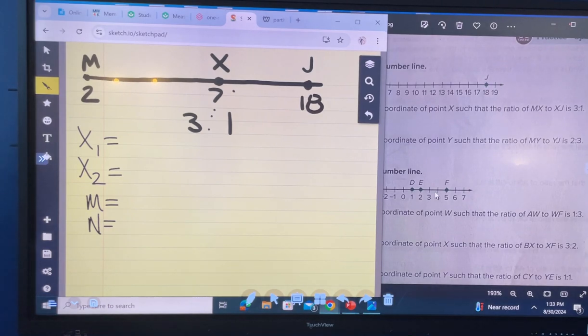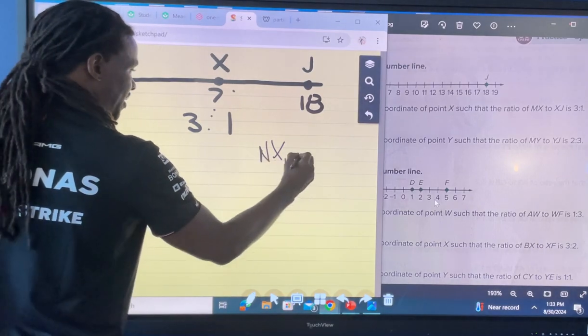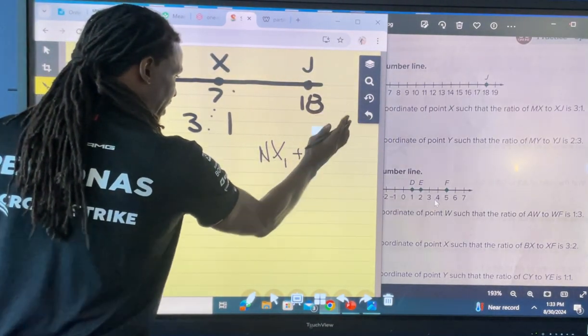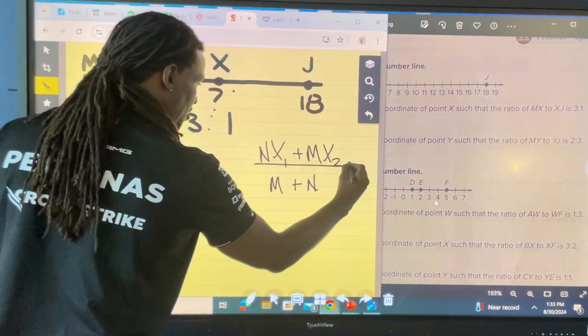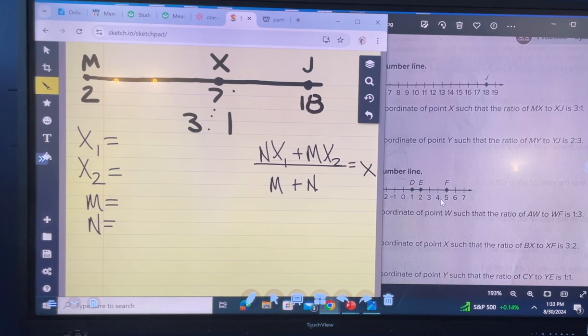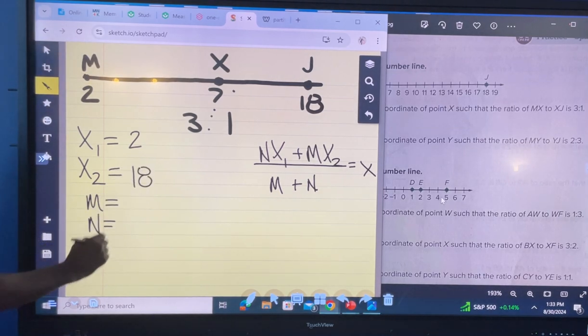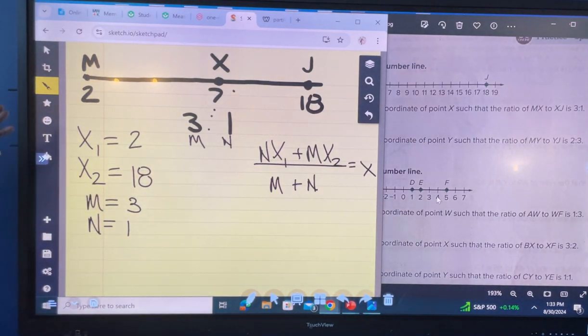All right. So remember our partitioning line segment formula. We're going to have to multiply N times X1, add that to M times X2, and we're going to divide that by M plus N. And that's going to give us our X. So what's my X1? X1 is 2. My X2 is 18. My M is 3. My N is 1.